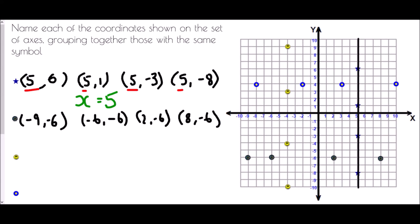Looking at the flower coordinates, the y coordinate is always negative six. All those points lie on a straight line, and that straight line crosses the y-axis at negative six. So this line is called y equals negative six.